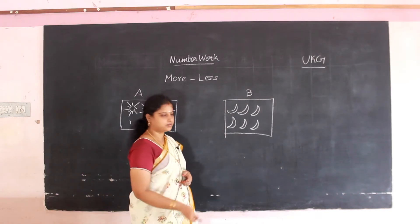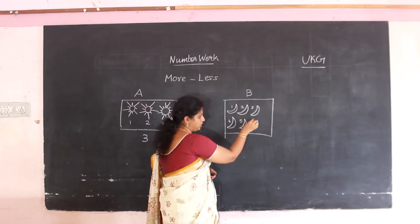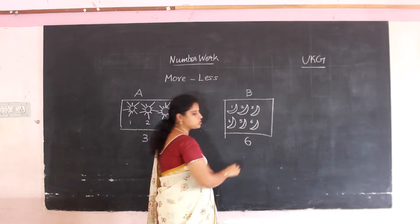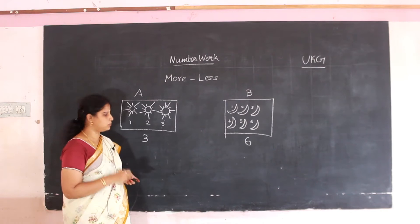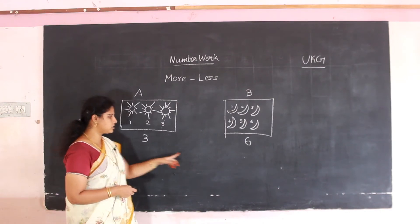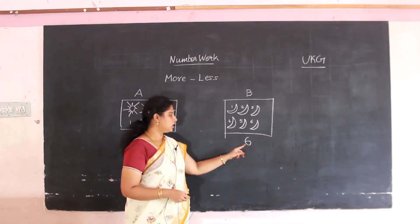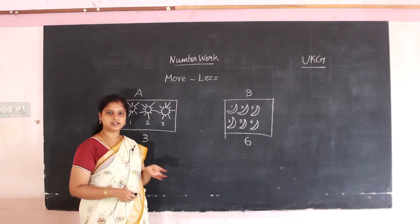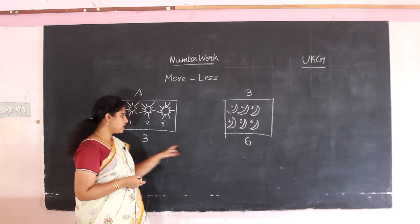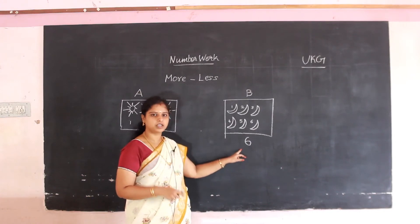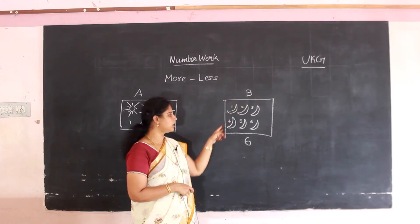Then box B — count it: 1, 2, 3, 4, 5, 6. So 6 moons are in box B. Now check which is more in numbers — 3 and 6. Find which is the bigger, greatest number. 6 is the bigger number. So 6 means box B — box B is more.